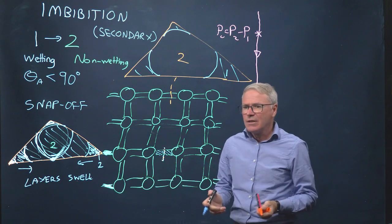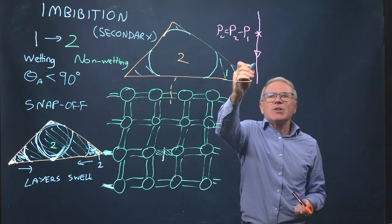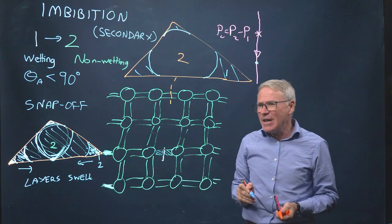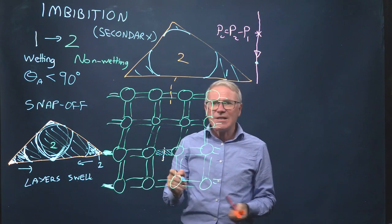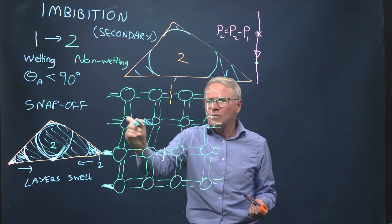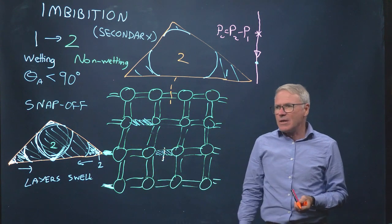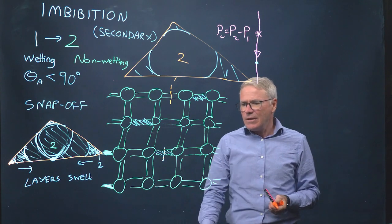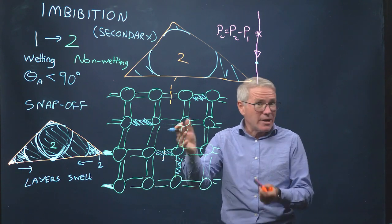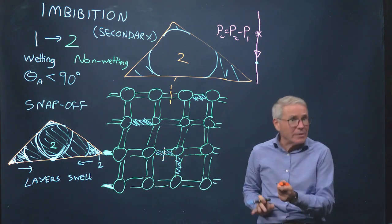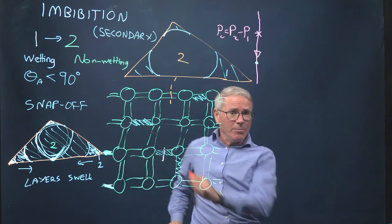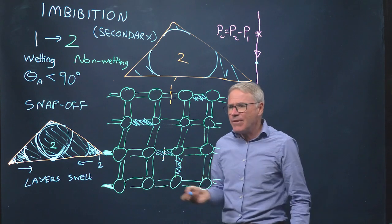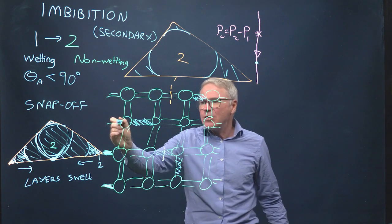The capillary pressure keeps dropping, and it's going to fill the next narrowest throat, then the next narrowest throat, and so on. So it fills basically just in order of size. This is essentially spatially random — if we have a statistically heterogeneous medium with a random distribution of throat radii, you're filling throats in a sort of random spatial order, but it's in order of size. We fill the throats in reverse order of size: the smallest ones first, then the biggest ones.